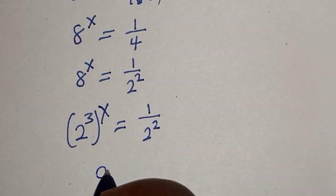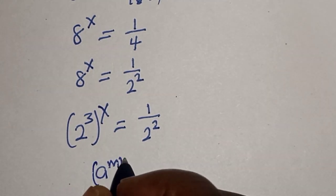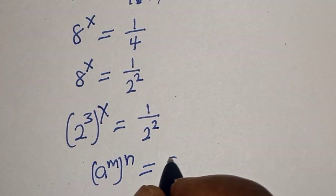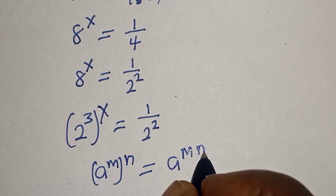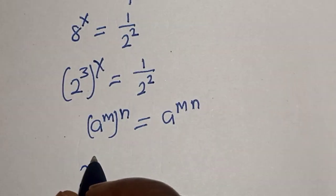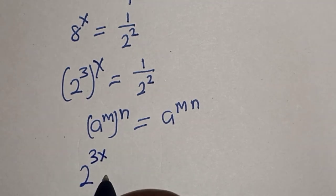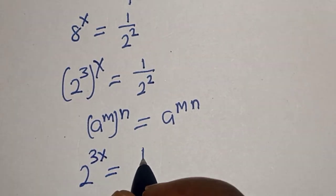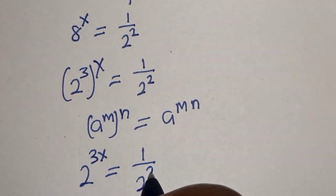Take note of this rule: a raised to the power of m, raised to the power of n, equals a raised to the power of m times n. Here, 2 raised to the power of 3 times x equals 1 over 2 squared, so 2 to the 3x equals 1 over 2 squared.